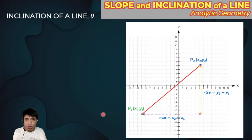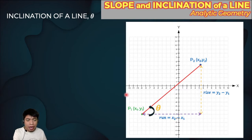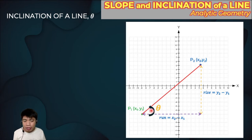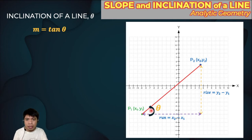Now let's proceed to the inclination of a line, which is the angle theta of our line. That is simply the angle that the line makes with the horizontal. The inclination of the line is always measured from the horizontal — it may be counterclockwise or clockwise. We know from differential calculus that the slope equals tangent theta, and the slope is y2 minus y1 over x2 minus x1.